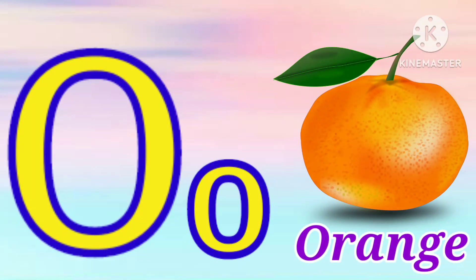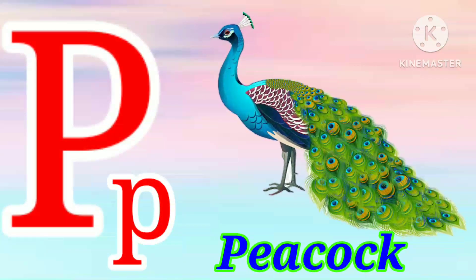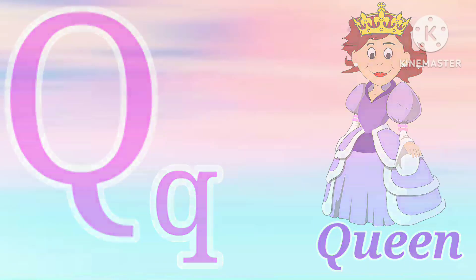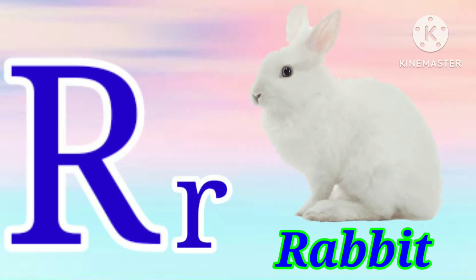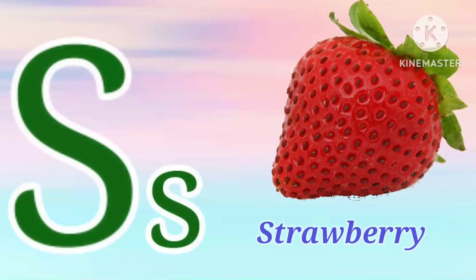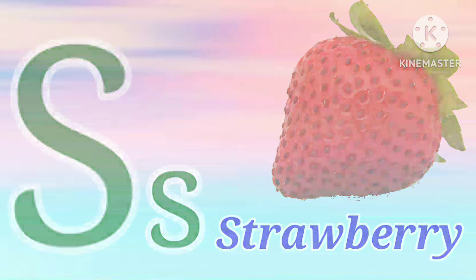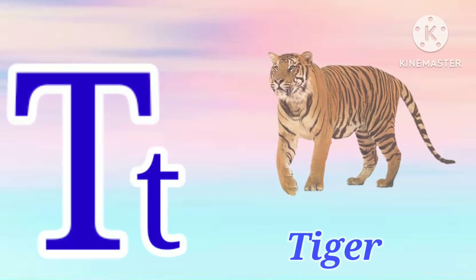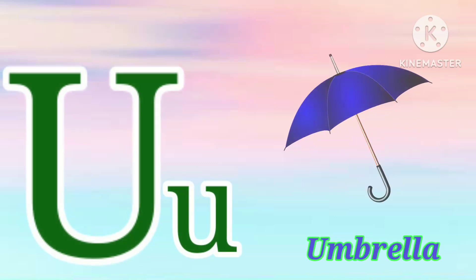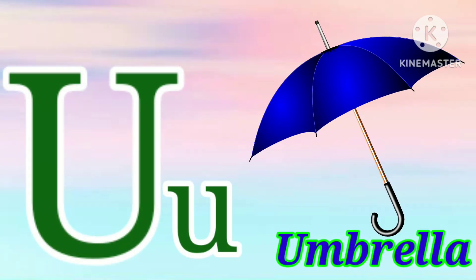O for Orange. P for Peacock. Q for Queen. R for Rabbit. S for Strawberry. T for Tiger. U for Umbrella. V for Van.